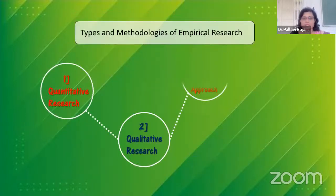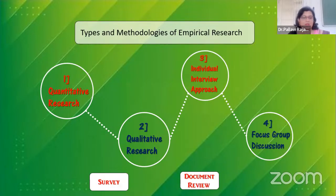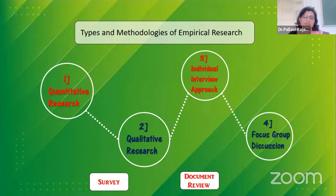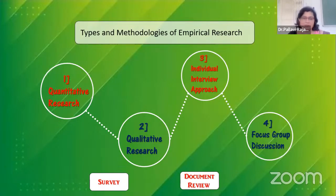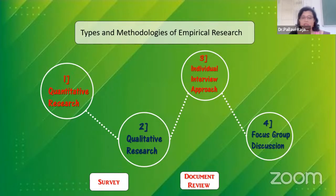Types of methodology of empirical research: empirical evidence can be gathered either using quantitative or qualitative research methods. Under the quantitative research method, the data is gathered through numerical data. It is used to quantify opinions, behaviors, or other defined variables. These are predetermined and are in a more structured format. Some of the commonly used methods are surveys, longitudinal studies, polls, etc.